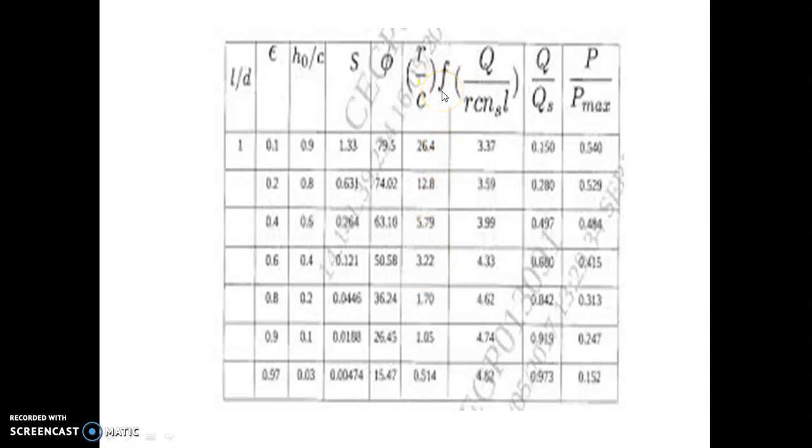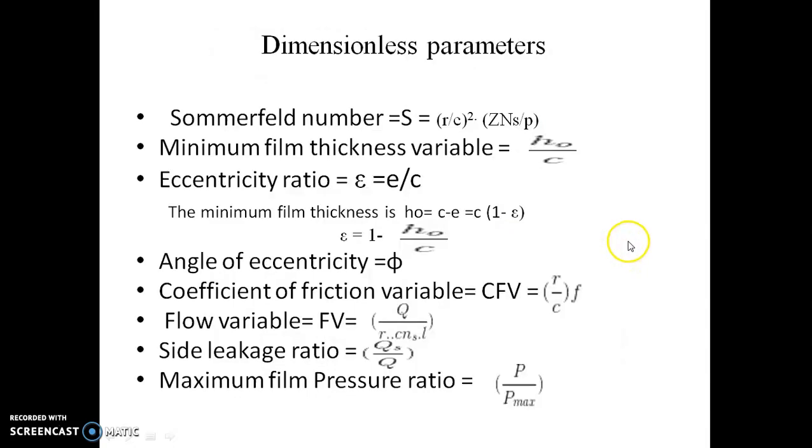For example, for L by D ratio 1 and Sommerfeld number 0.121, we can have the value of coefficient of friction variable 3.22 from this we can get the value of coefficient of friction f. Similarly for flow ratio we have the value of 4.33 we can get the value of total flow q.